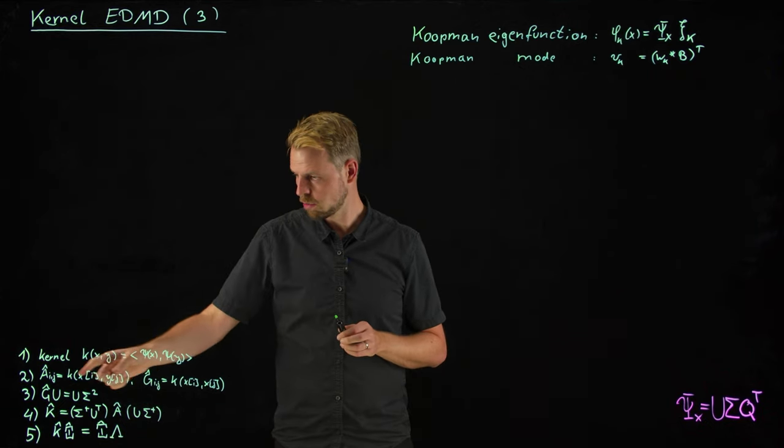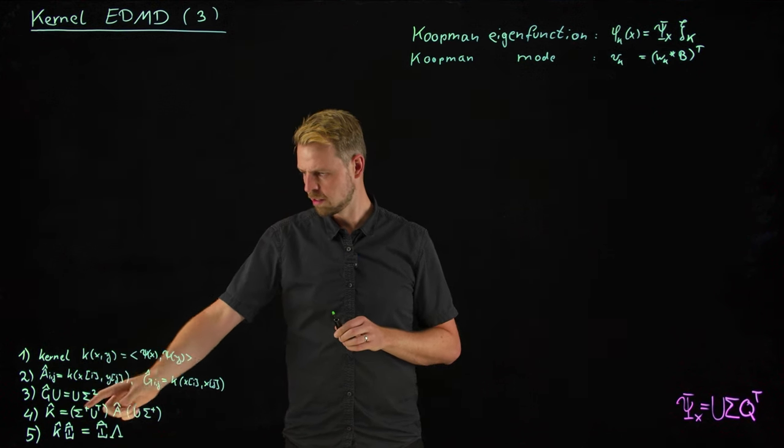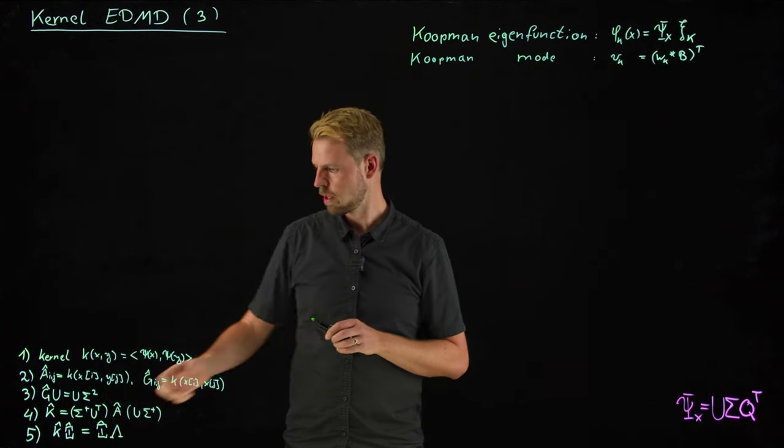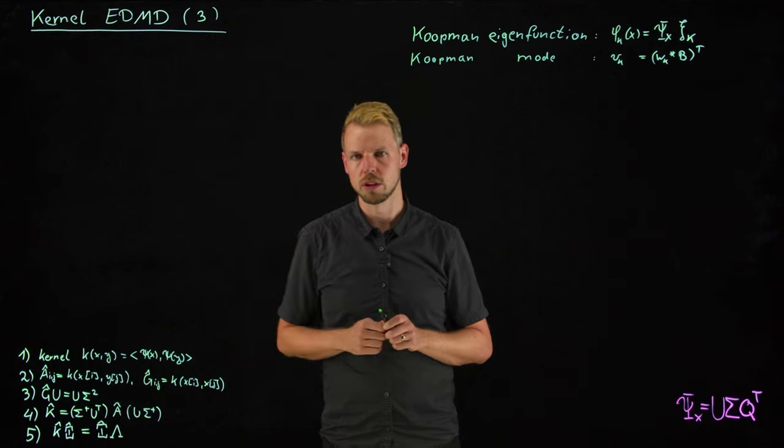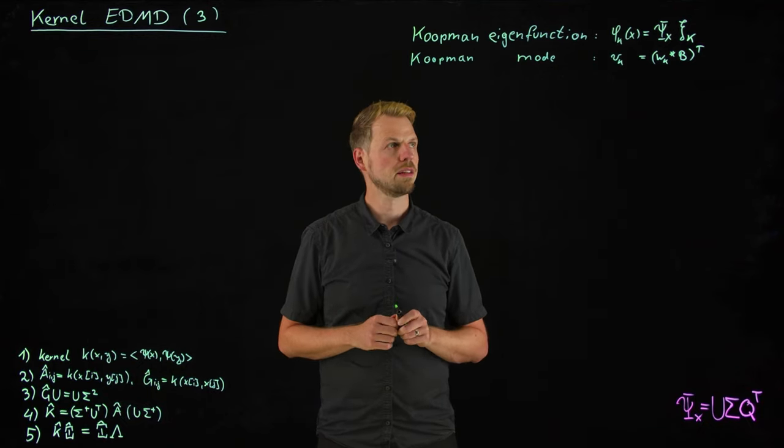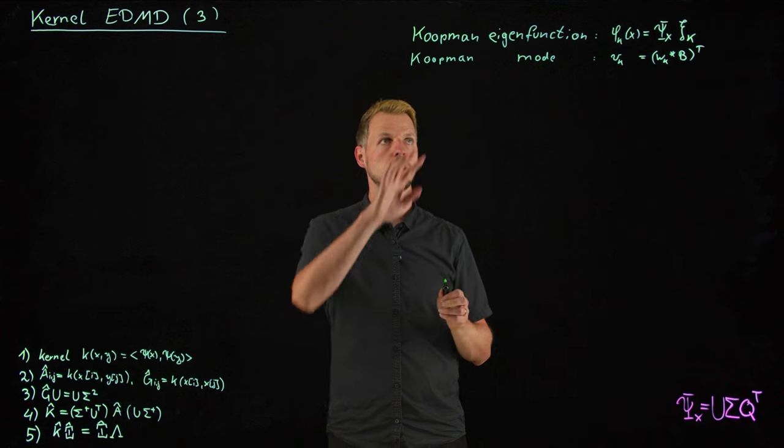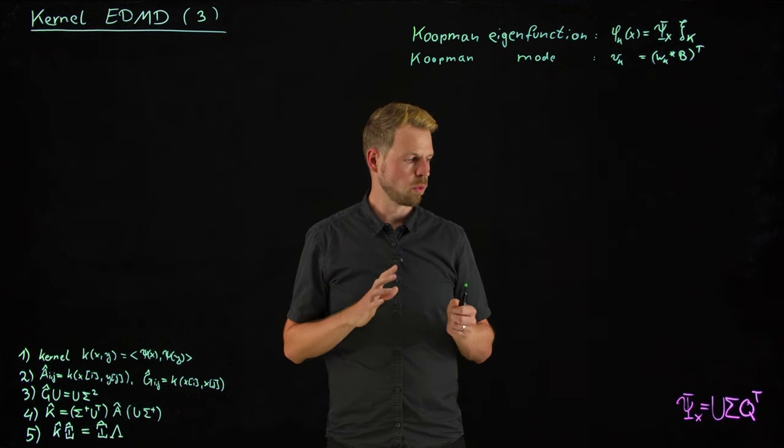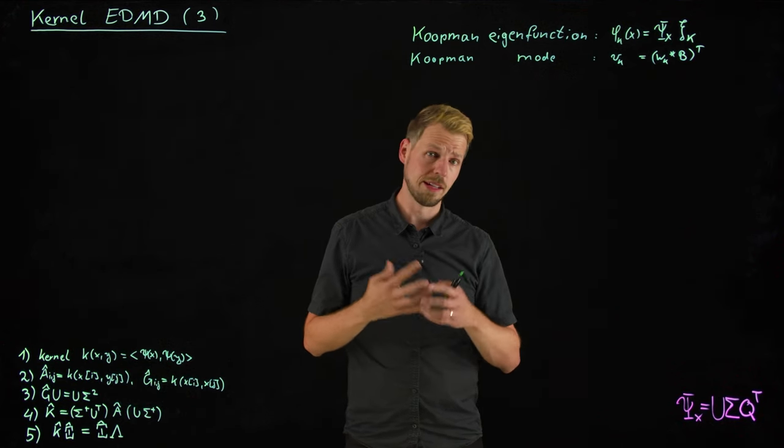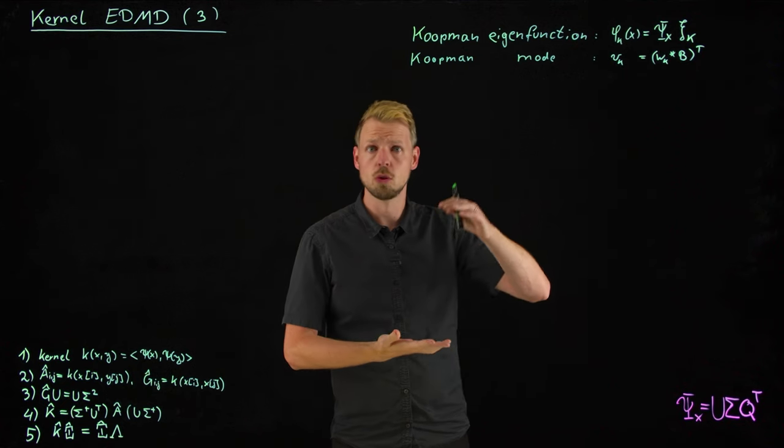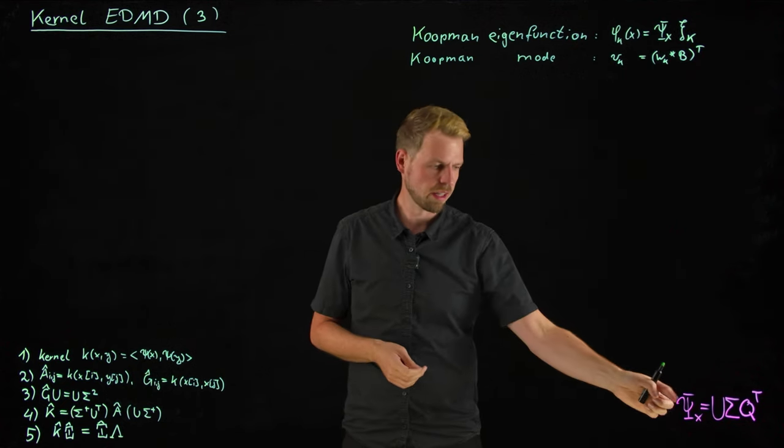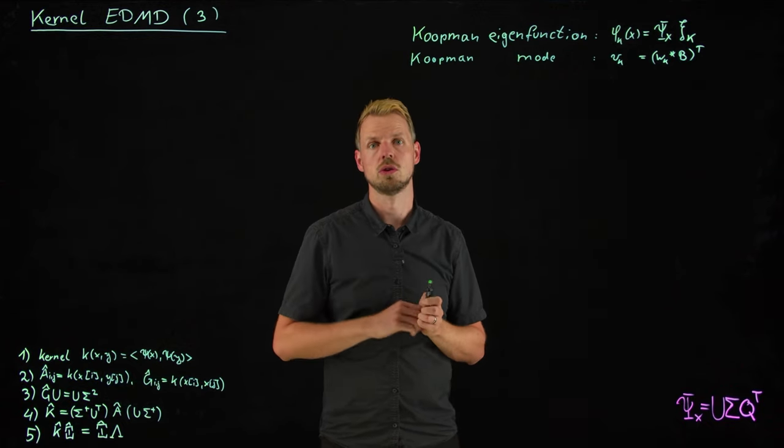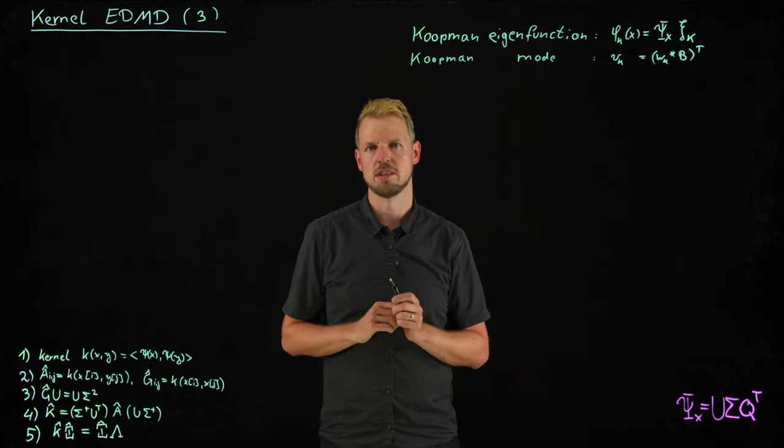And then we saw that actually this is a straightforward procedure. Given A and G, you compute an eigenvalue decomposition of the G-hat matrix. We use this and the A-hat matrix to compute our K-hat matrix in the M by M dimensions and then perform an eigenvalue decomposition of this K-hat matrix. What's left to study is the computation of Koopman eigenfunctions and Koopman modes in this kernel setting without having to go to the original state space.